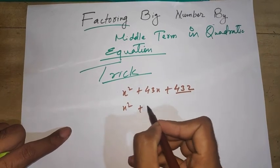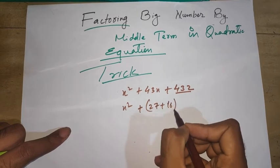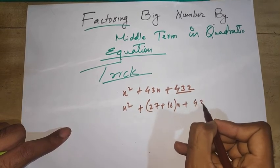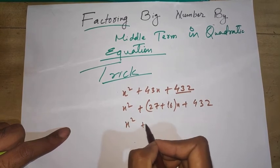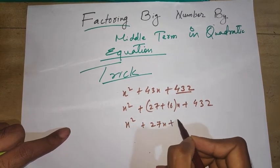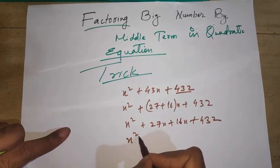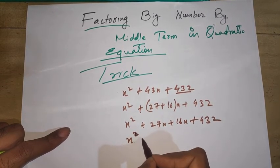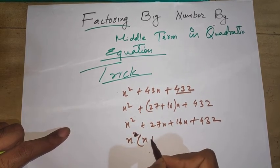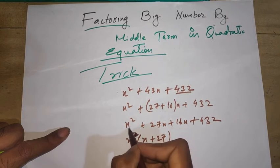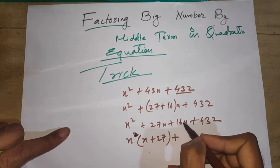We got 27 and 16x. There's 432. So I'm going to write x² + 27x + 16x + 432. I'm going to take x common, so x(x + 27).